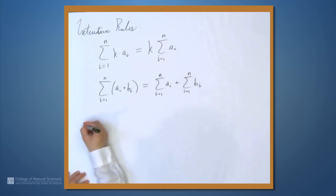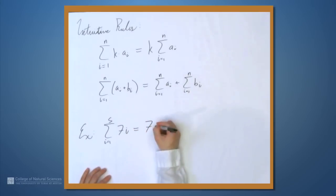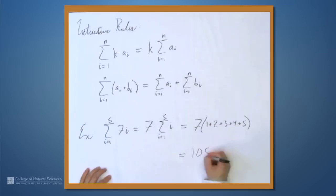So, as a simple example, if we have the sum from i equals 1 to 5 of 7i, this is 7 times the sum from i equals 1 to 5 of i, which equals 7 times (1 plus 2 plus 3 plus 4 plus 5). This thing in parentheses here is equal to 15, so 7 times 15 is 105.